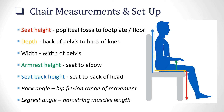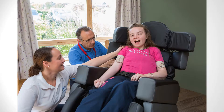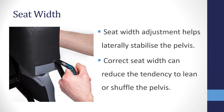These are critical to proper use of the chair functions. Remember that these are guidelines only and they will be affected by size and body shape. Let's run through exactly why chair measurements and correct chair setup is vital for seating provision. The width adjustment will help to laterally stabilise the pelvis. The correct seat width can reduce the tendency for clients to lean or shuffle the pelvis. These undesirable movements can result in pelvic obliquity or pelvic rotation, and then the posture will become increasingly unstable with unequal loading of tissues.